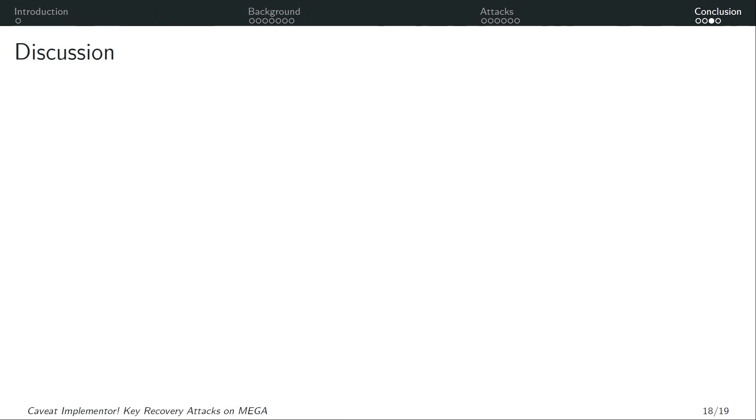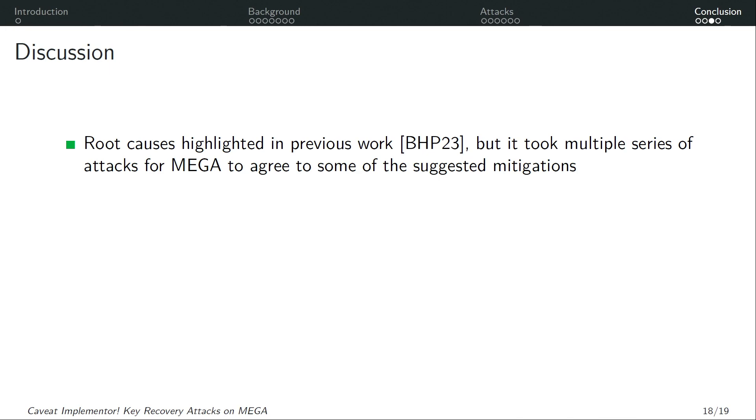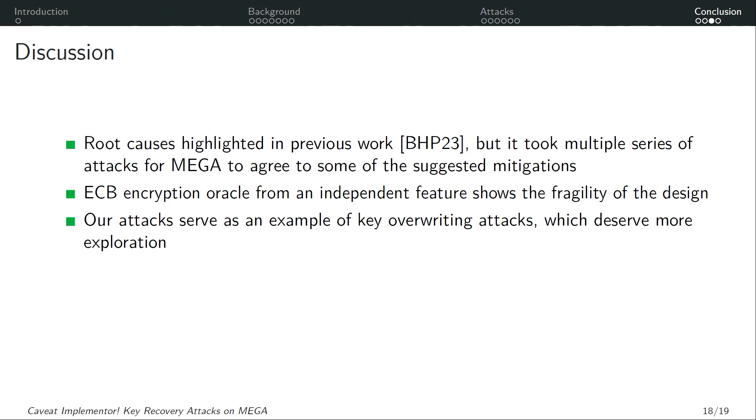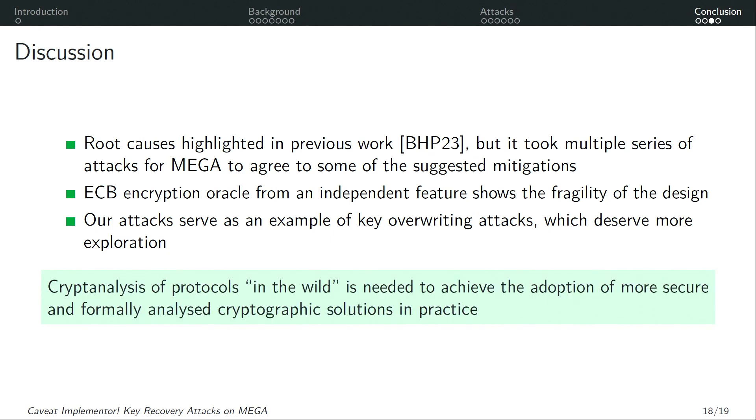But this time they agreed and informed us that they were working on a larger redesign. This was meant to change how private keys are stored so they are finally adding integrity protection. They have removed the ECB encryption oracle and replaced the low-level library that was the source of our implicit bugs. And this upgrade happened last month. We have provided feedback on these changes but we have not reviewed them in detail. And MEGA has also awarded a bug bounty. Now I have a couple of takeaway points to discuss. So first, as I said, the root causes were already identified in previous work but it took multiple series of attacks for them to actually implement some of the suggested mitigations. The ECB encryption oracle is interesting since it comes from a completely independent feature of the protocol that was under attack and shows the fragility of the system. Finally, our attacks also serve as another example of key overwriting attacks which perhaps deserve more exploration.